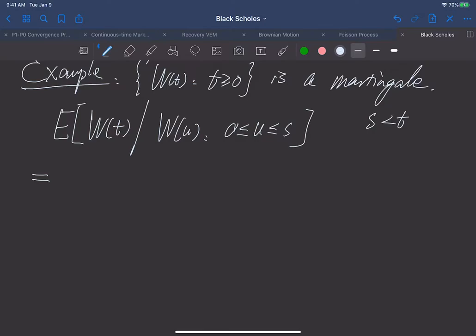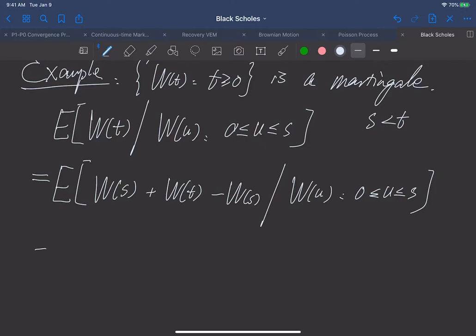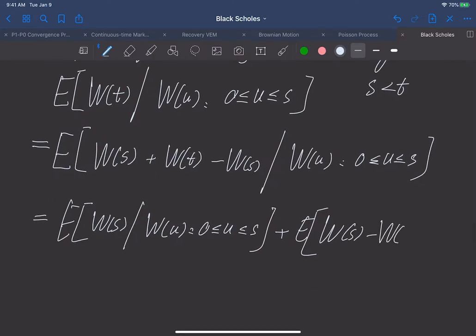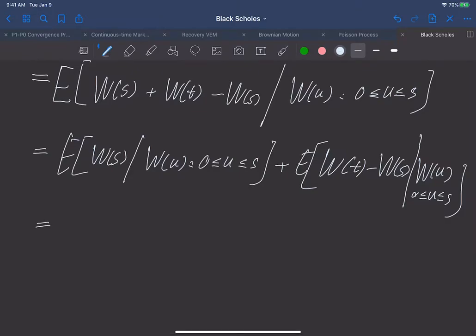We split into W(s) plus W(t) minus W(s), given W(u) for u ≤ s. Now we'll further split this into two terms: expectation of the first term plus the expectation of the second term. For the first term, it's very straightforward. Because s is one of the time here, we already know the value of this Brownian motion at time s. As a result, this is nothing but W(s).